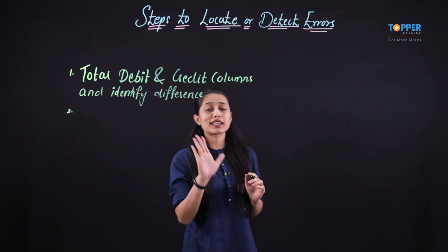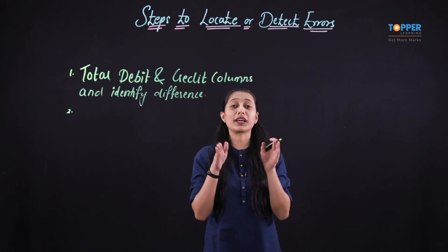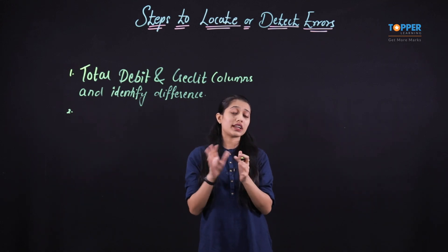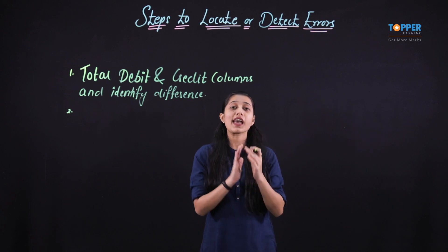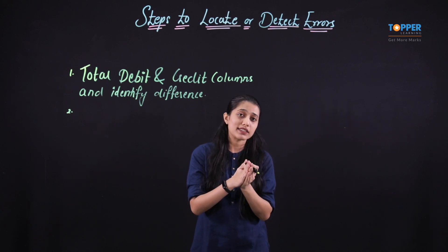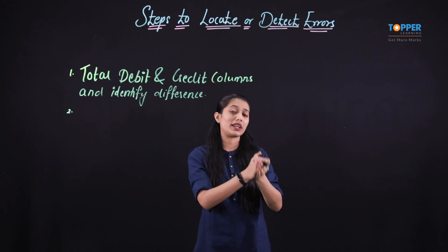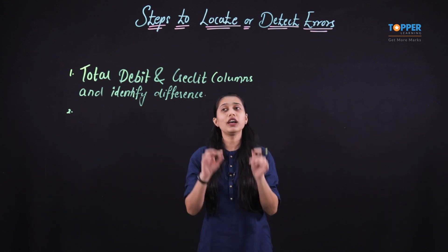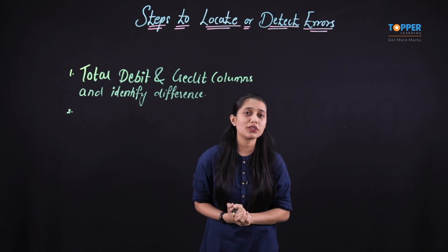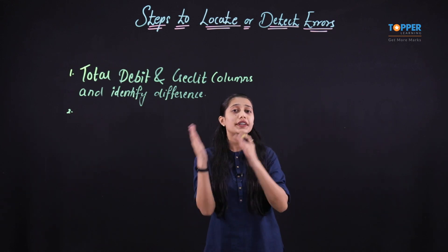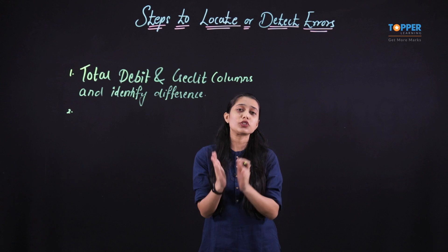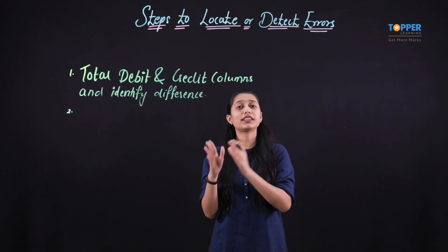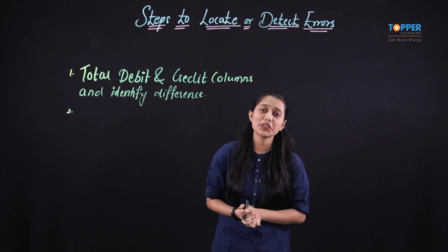Here we will identify the exact amount of difference that is shown by the trial balance. Once that is done, we will go to the sundry debtors and sundry creditors and check whether the balances — that is the debit as well as the credit balances — have been correctly incorporated in the trial balance. So the second important step is to go back to the sundry debtors and sundry creditors and check whether the balances of those debtors and creditors have been correctly given and arrived at in the trial balance.